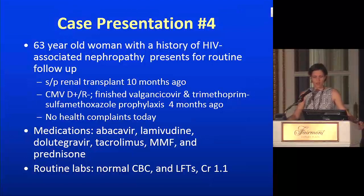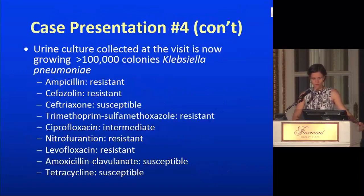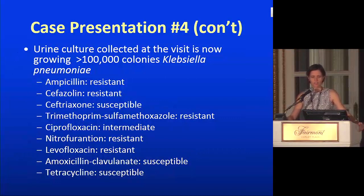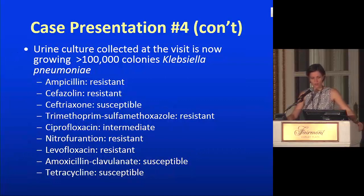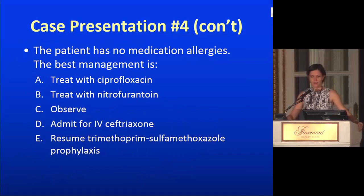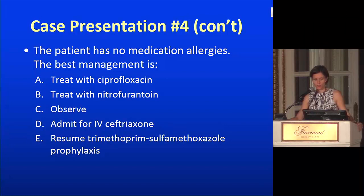A urine culture collected for surveillance grows greater than 100,000 colonies of Klebsiella pneumoniae. It's resistant to ampicillin, cefazolin, nitrofurantoin, and levofloxacin; susceptible to tetracycline, amoxicillin-clavulanate, and ceftriaxone; and intermediate to ciprofloxacin. The patient has no medication allergies. Best management options: A: treat with ciprofloxacin, B: treat with nitrofurantoin, C: observe, D: admit for IV ceftriaxone, or E: resume trimethoprim-sulfamethoxazole prophylaxis.